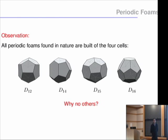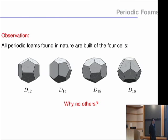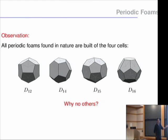Why no others? There is no answer. Maybe there is some variational principle that would allow settling this question — whether these are all possible cells when combining pentagons and hexagons with no two neighboring hexagons. In the beginning it could be other cells, but these are the four that we see in nature.